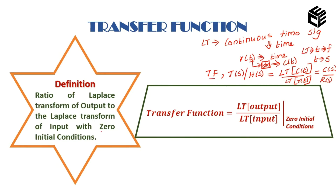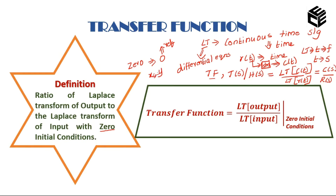Here comes a question: why are we using the condition of zero initial conditions? Zero initial conditions means we are starting from zero — zero is the reference line of the system. We don't have any previous values; we consider zero as the starting point. This Laplace transform is only applicable for differential equations, and it is completely used to represent differential equations.